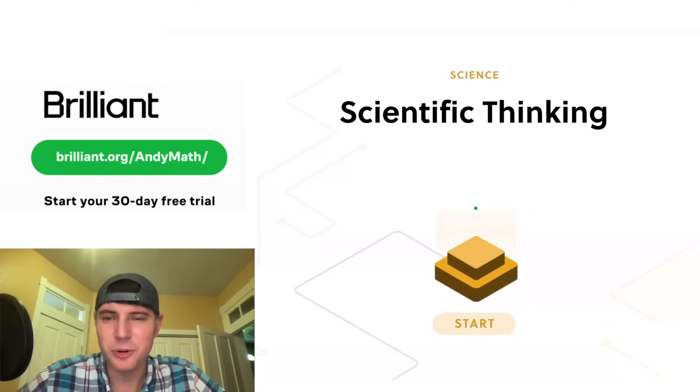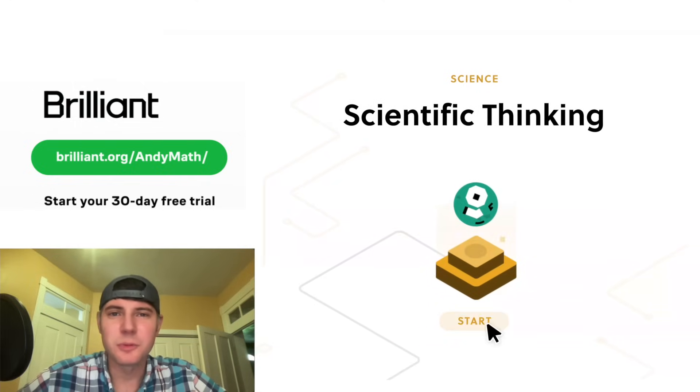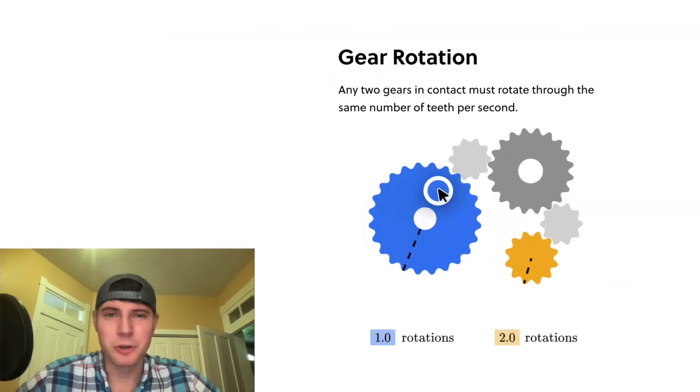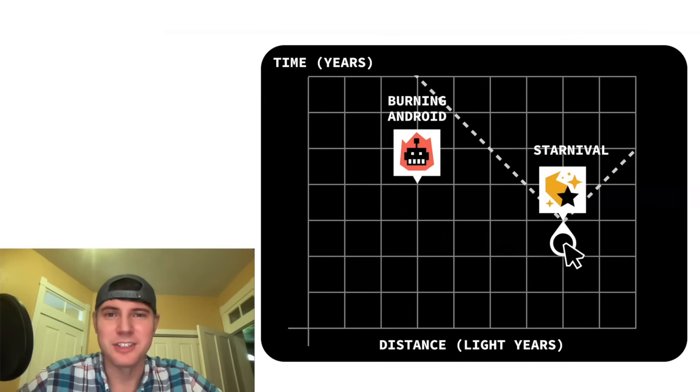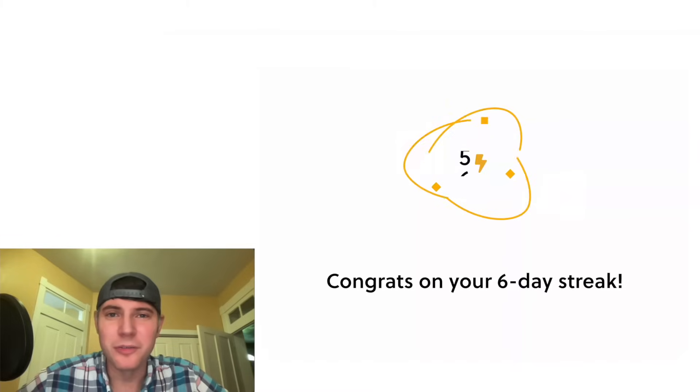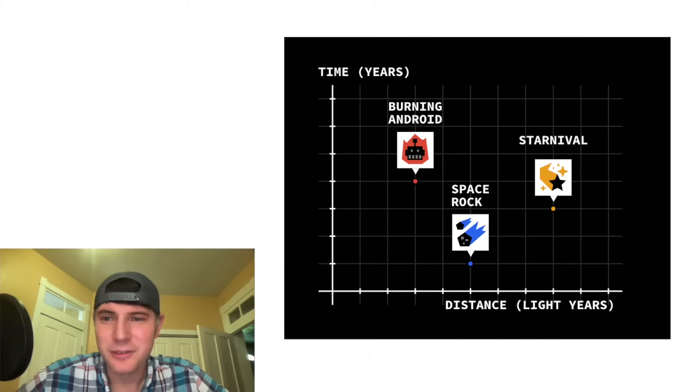I really enjoyed this course on scientific thinking. It starts with simple machines like gears and pulleys, and then it eventually worked up to Einstein's special theory of relativity. One of my favorite parts were all the fun thought experiment questions. For example, if we have this distance-time graph, where the y-axis is time in years, and the x-axis is distance in light years.